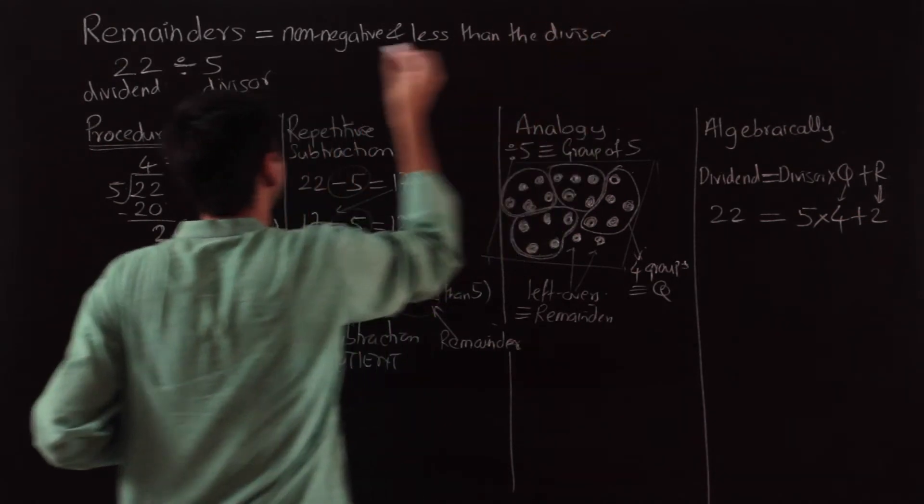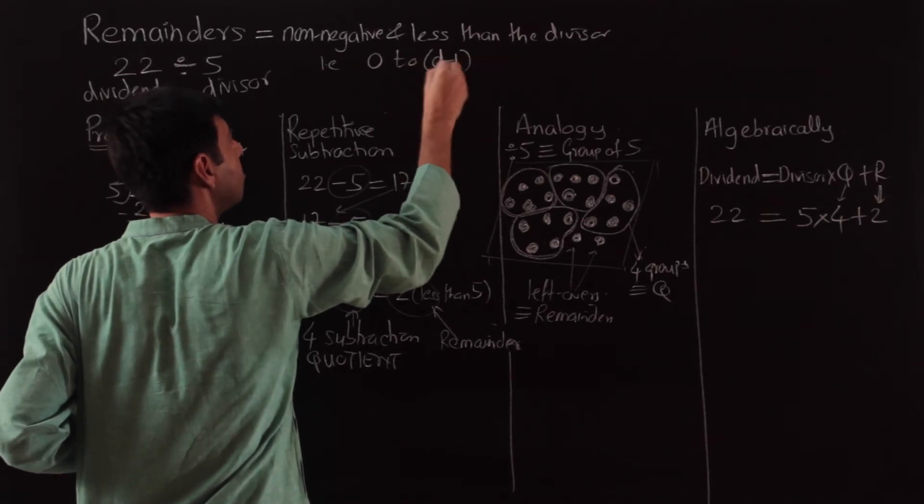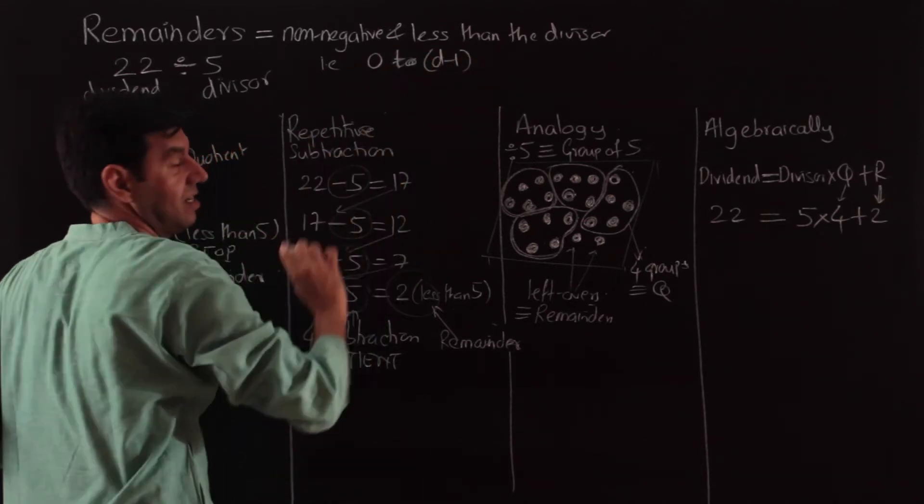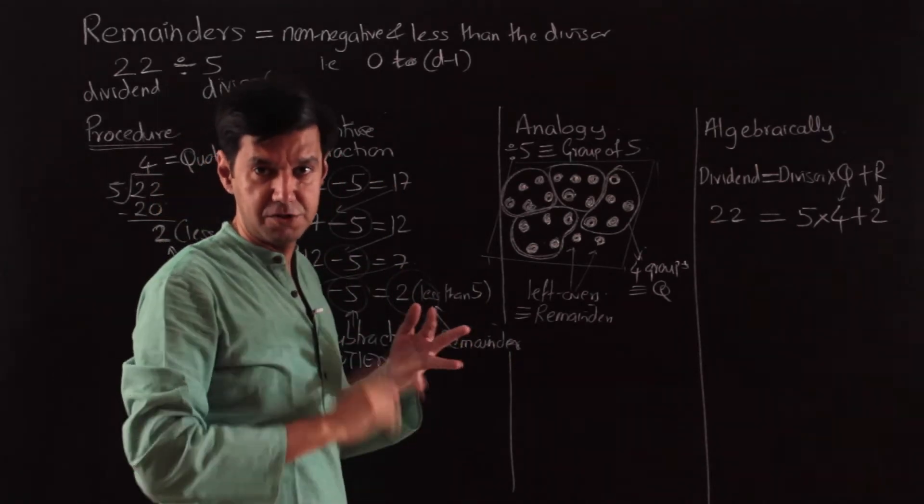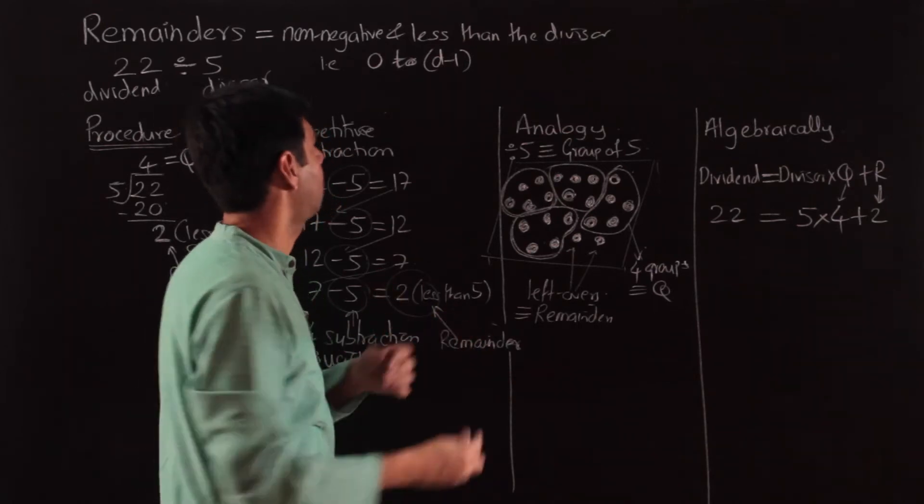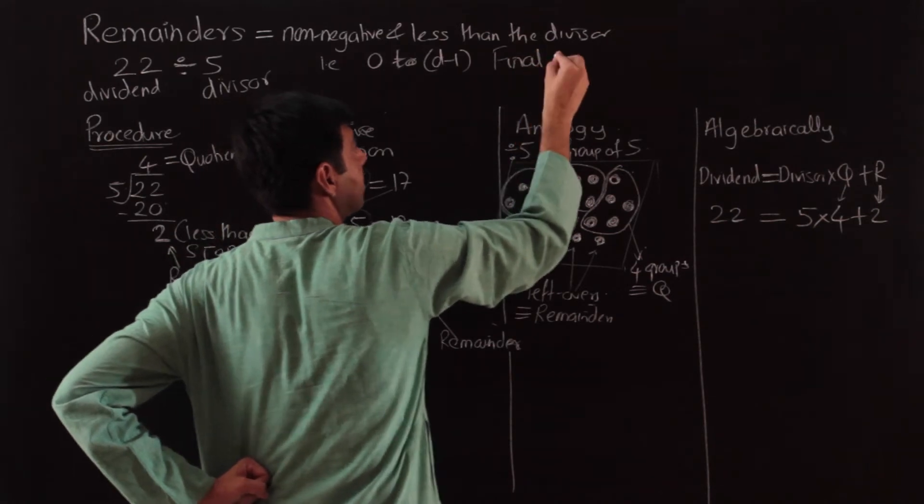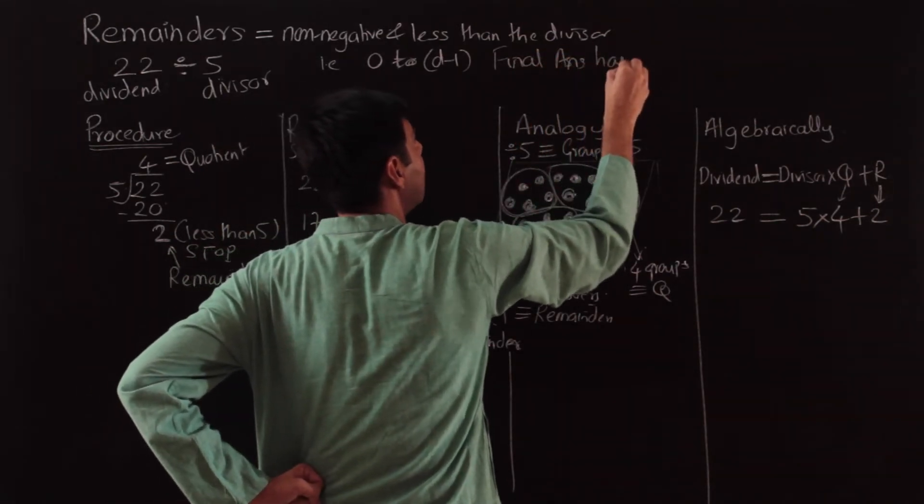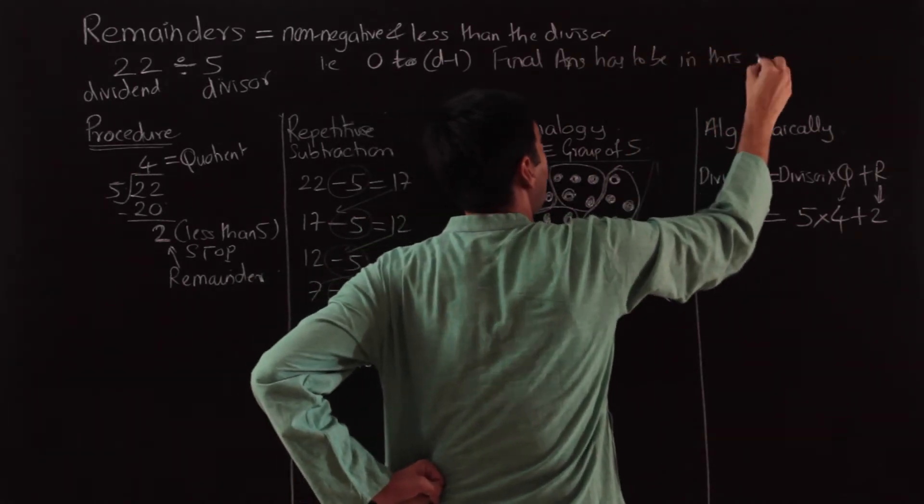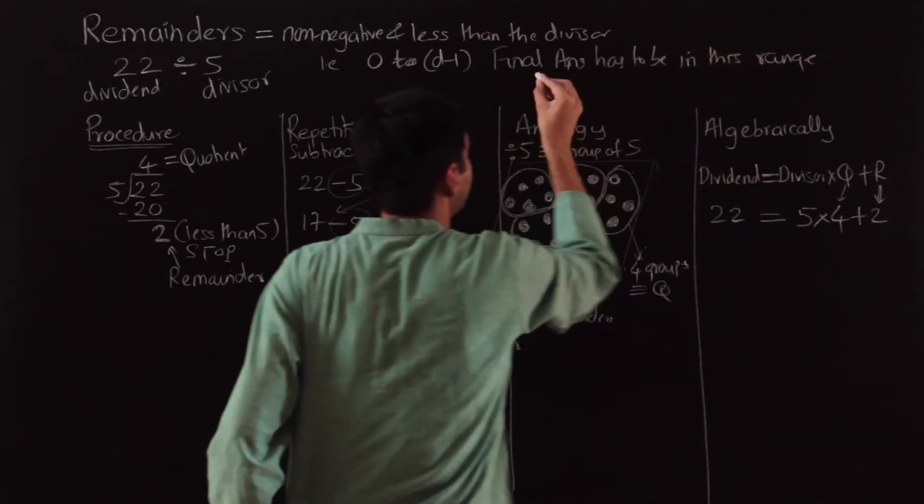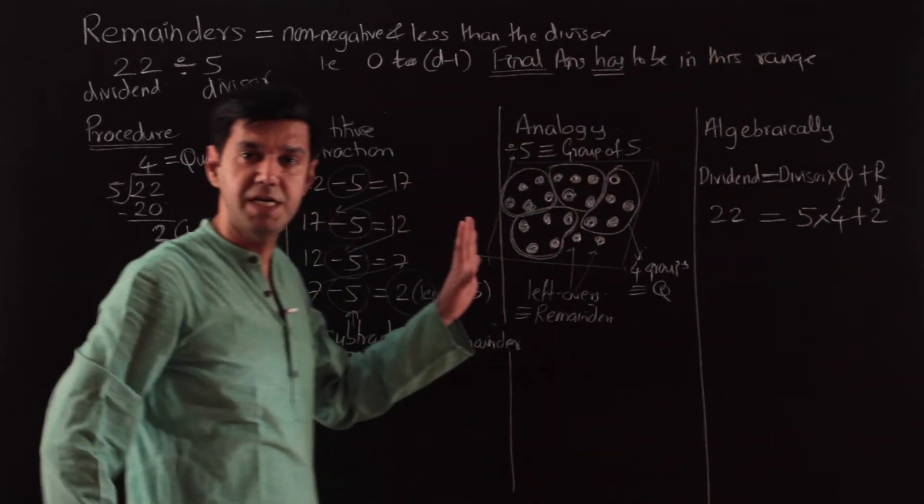If I want to write in another way, these have to be 0 to d-1. Throughout the chapter, d will refer to the divisor. 0 to d-1—there are d different values including 0: 0, 1, 2, 3, 4, till d-1. And this has to be my final answer. The final answer has to be in this range. Why am I emphasizing this?